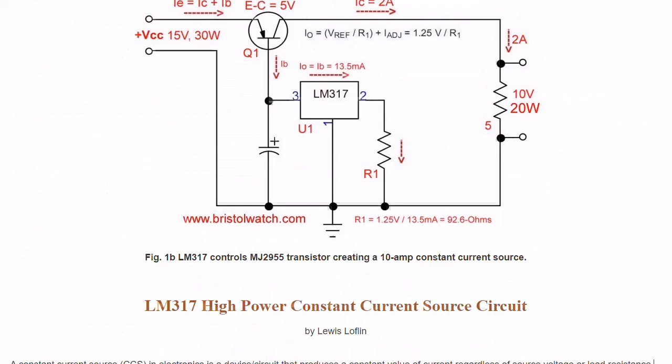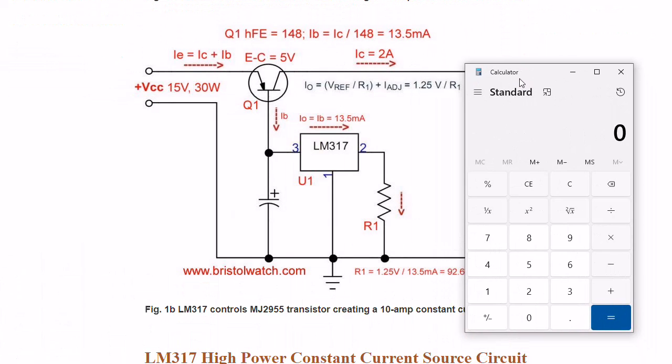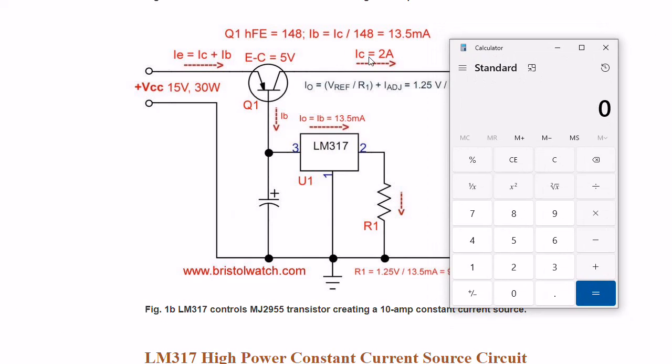So looking back at our earlier diagram, how do I determine my current? Let's say in this example I desire a 2 amp output. Let's pull out our handy calculator. I want a 2 amp output. So I'm going to take 2, and I'm going to divide it by the HFE, which I measured at 148, and that comes out to be 13.5 milliamps as I'm showing here.